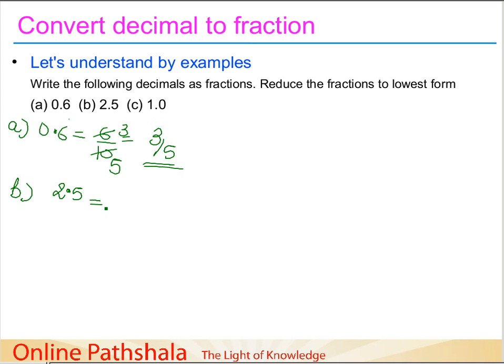2.5. This has only one tenth place after the decimal. So this becomes 25 by 10. Let's try and reduce this. This becomes 5 times 2 equals 10.